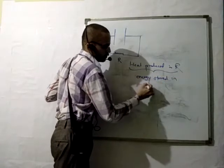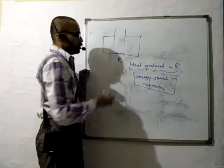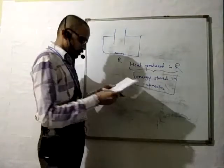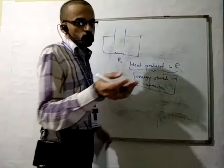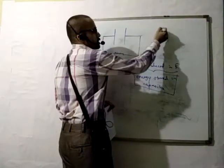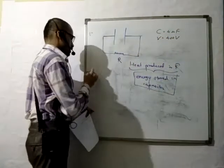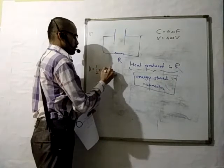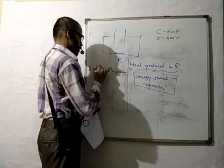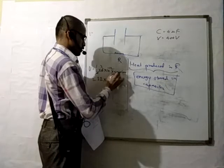The energy stored in the capacitor — you have to calculate it. The formula is U = ½CV². U = ½ × 4 microfarad × (400)². So U = ½ × 4 × 10⁻⁶ × 160000. This gives 0.32 microjoules.